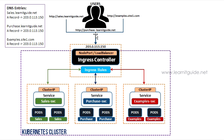Then create an Ingress Controller that faces the external network and routes traffic, and define rules in Ingress resources. You expose only the Ingress Controller to outside using NodePort or LoadBalancer. In DNS, all domain names — sales.lanetk.net, purchase.lanetk.net, examples.site1.com — point to the Ingress Controller, giving you a single entry point for all applications.